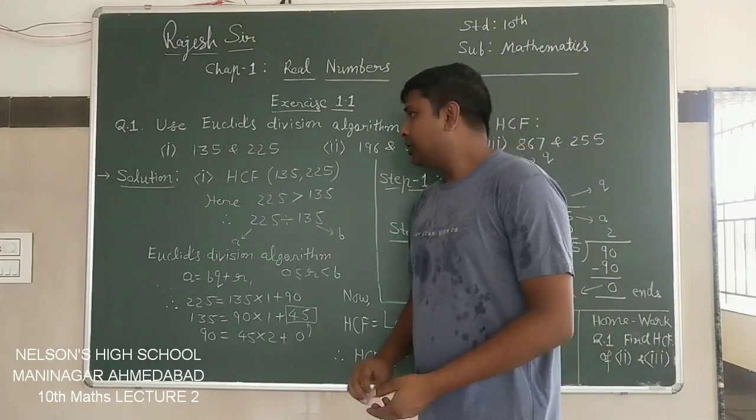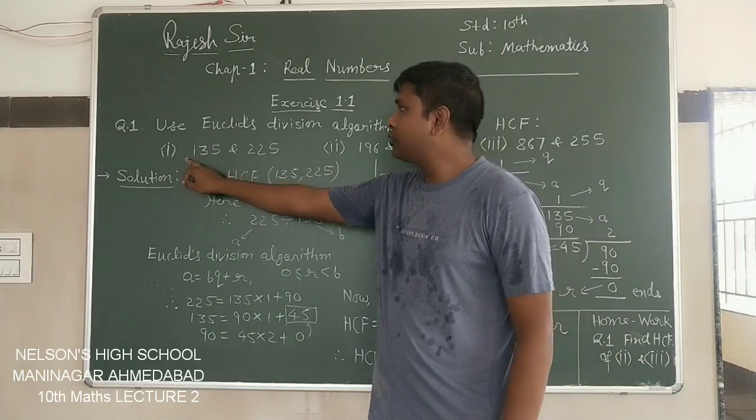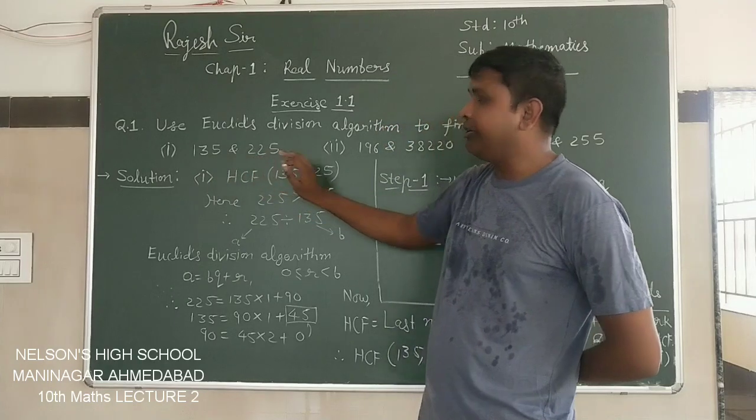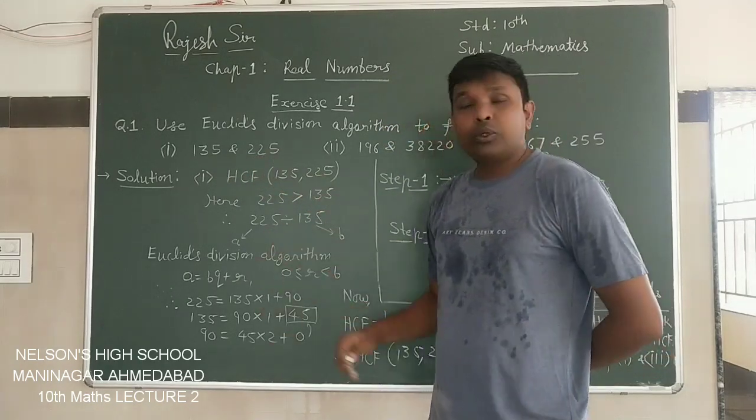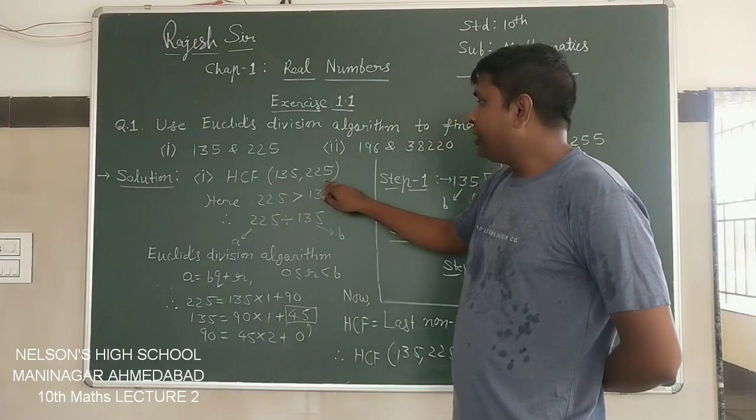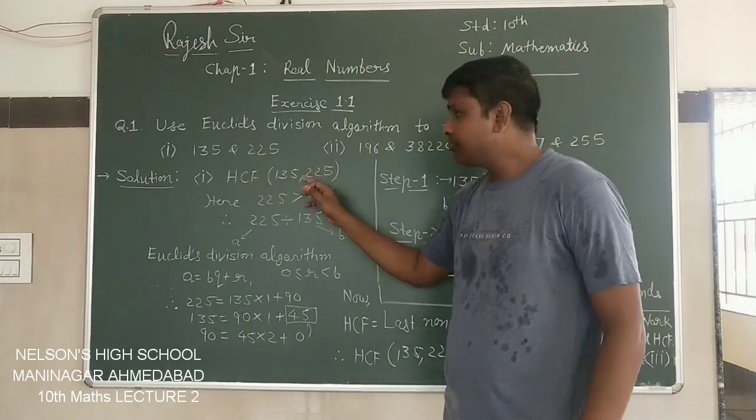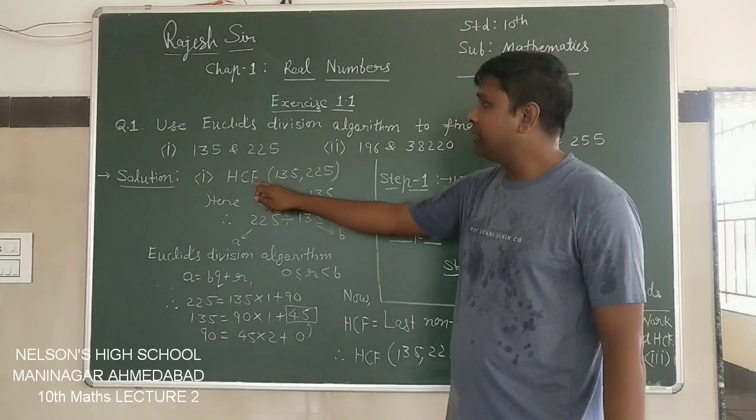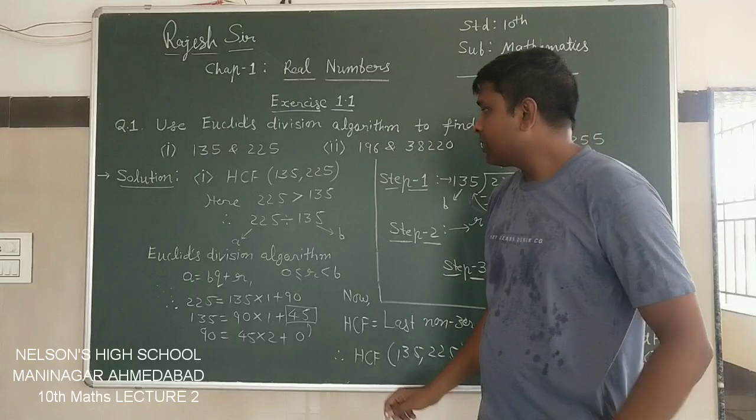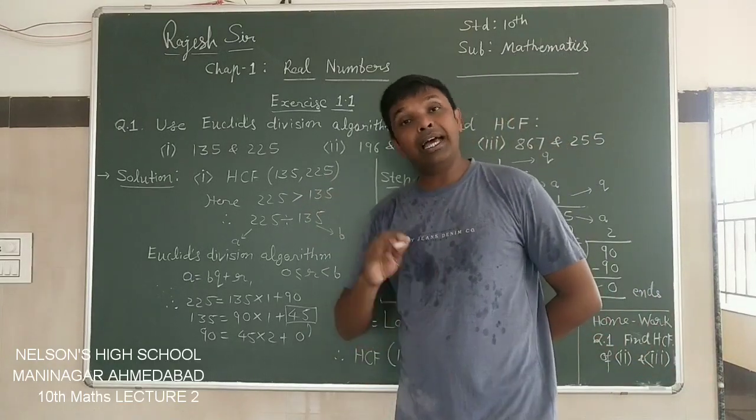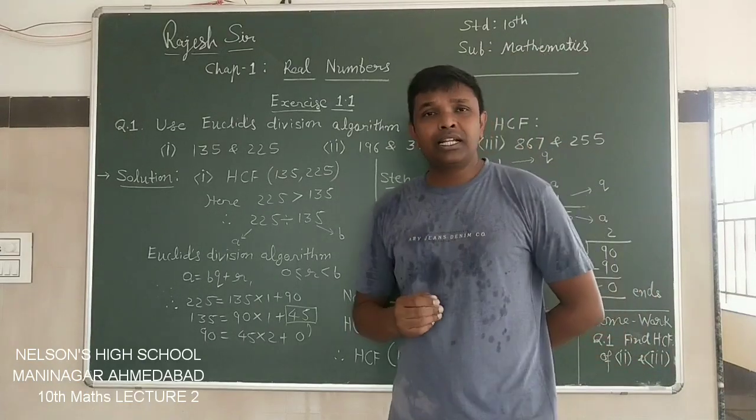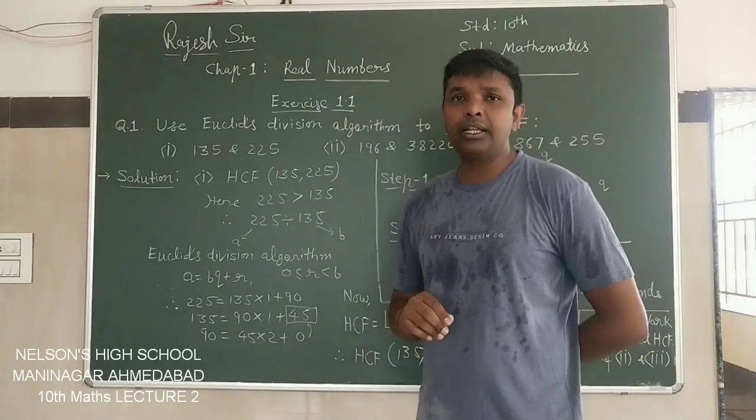We are doing the first question, finding the HCF of 135 and 225. What is the first thing we have to show here? HCF of 135 and 225 can be shown this way in maths. Now to find out HCF, first, as we have understood in the theory also, we have to decide which number is greater and which is smaller.